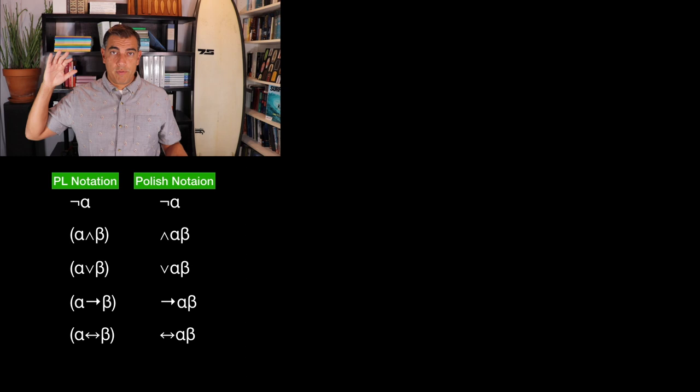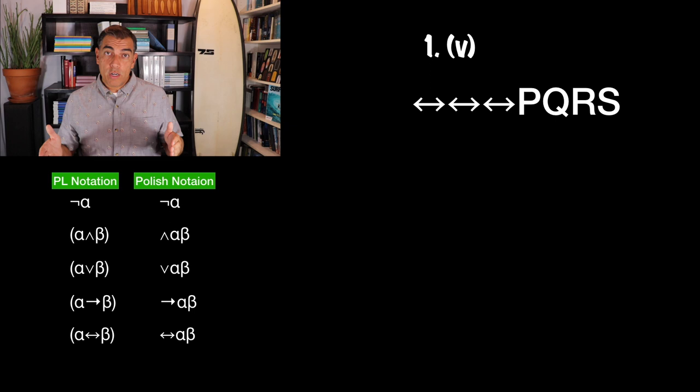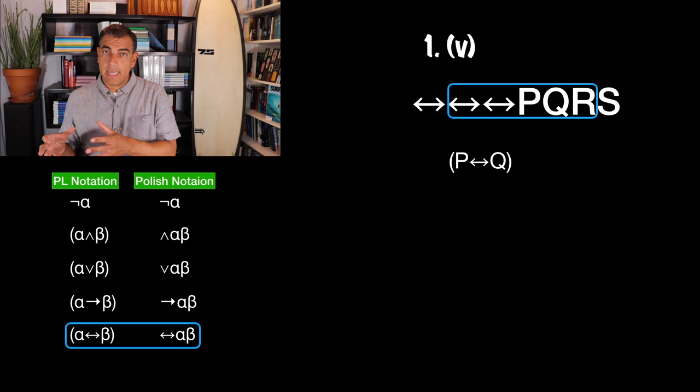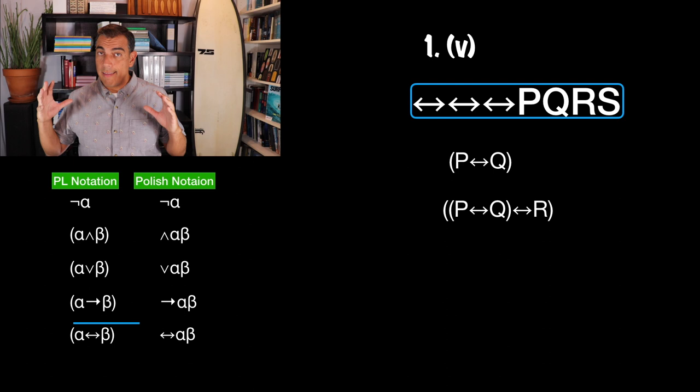Five starts with three double arrows and then P Q R S. This one's actually fairly simple. The first thing we'll do is P if and only if Q. We take that and make it the first part of the next biconditional: P iff Q iff R. And then we take that whole thing and make it into another biconditional: P iff Q iff R iff S.